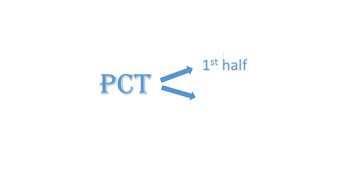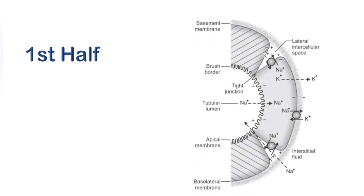Sodium reabsorption in PCT. In the first half of PCT, compared to the tubular lumen, the tubular cells have a lower concentration of sodium because the basolateral membrane has a sodium-potassium pump. This pump drives sodium out of tubular cells into the lateral intercellular spaces, creating an electrochemical gradient across the membrane.